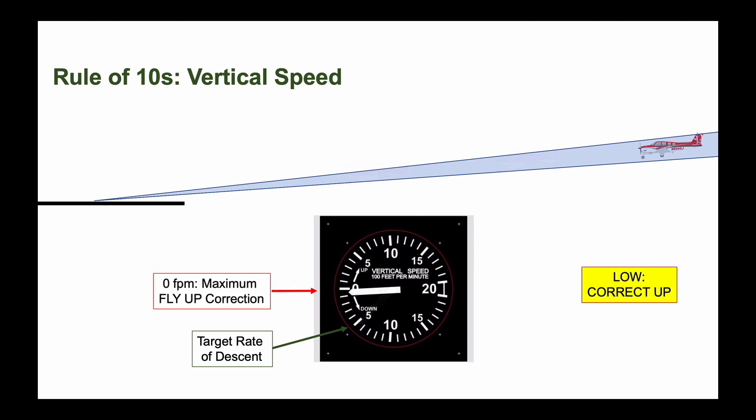If you're low on glide path, add power or pitch, or both, to reacquire. Bring vertical speed up to zero, but no higher. This is 500 feet per minute less than the normal approach rate of descent.